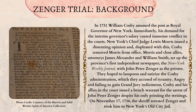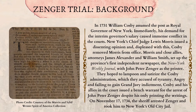Zenger Trial background. In 1731, William Cosby assumed the post as royal governor of New York. Immediately, his demand for the interim governor's salary caused immense conflict in the courts. New York's chief judge, Lewis Morris, issued a dissenting opinion, and displeased with this, Cosby removed Morris from office. Morris and close allies, attorneys James Alexander and William Smith, set up the province's first independent newspaper, the New York Weekly Journal, with John Peter Zenger as the printer. They hoped to lampoon and satirize the Cosby administration, which they accused of tyranny. Angry and failing to gain grand jury indictment, Cosby and his allies in the court issued a bench warrant for the arrest of John Peter Zenger, despite his only printing the writings. On November 17th, 1734, the sheriff arrested Zenger and took him to New York's Old City Jail.